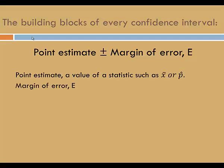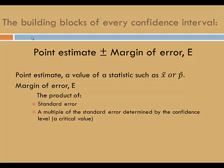The margin of error, E, is the product of a standard error and some multiple of the standard error determined by the confidence level. This multiple of the standard error is called a critical value.